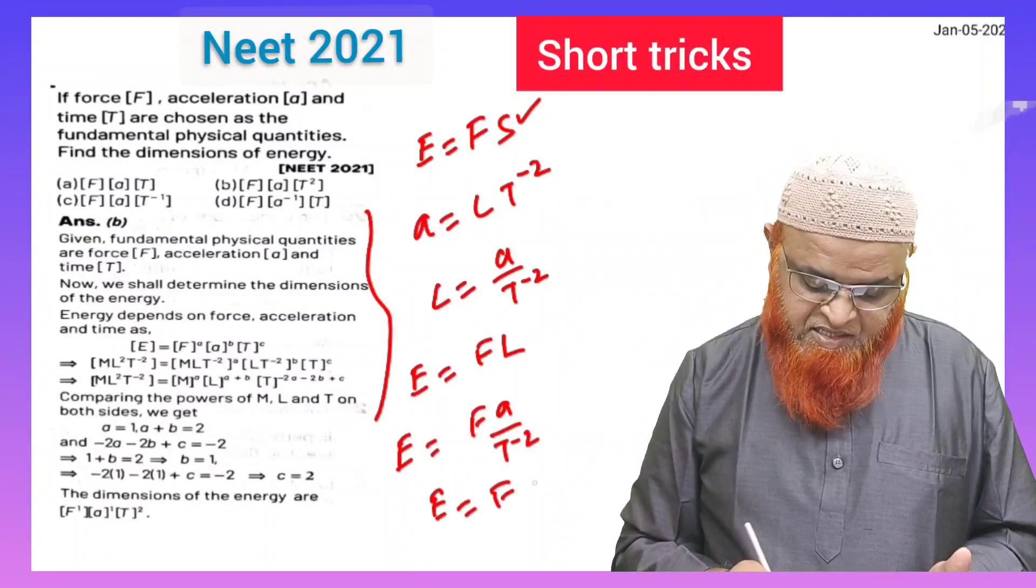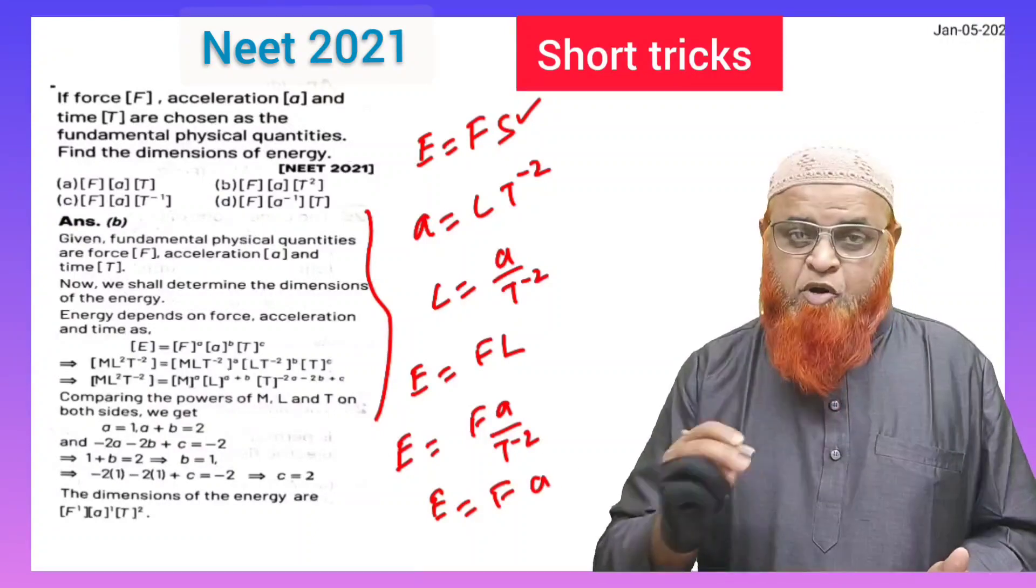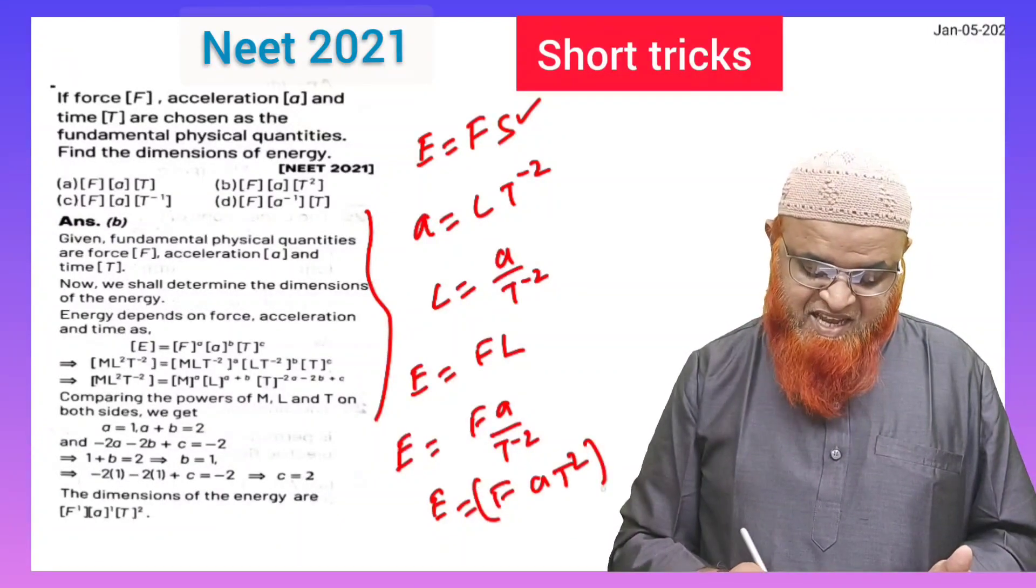Energy can be taken as F a T power minus 2 comes to the numerator becomes T square. That's it.